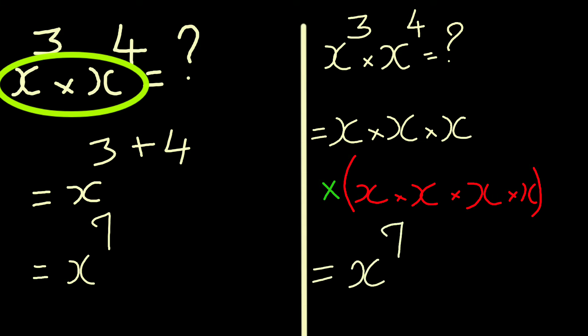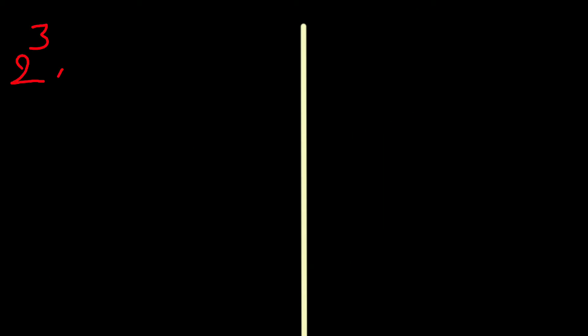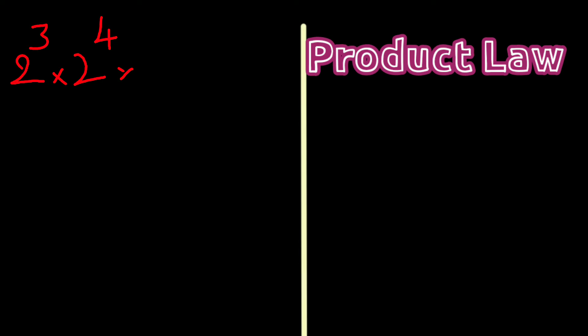Let's try a few more examples. 2 to the power 3, times 2 to the power 4, times 2 to the power 6. Applying the rule of adding powers with a common base, we get 2 to the power 3 plus 4 plus 6, which equals 2 to the power 13.